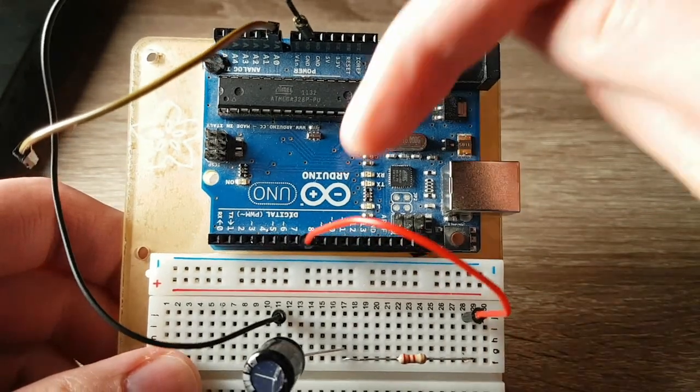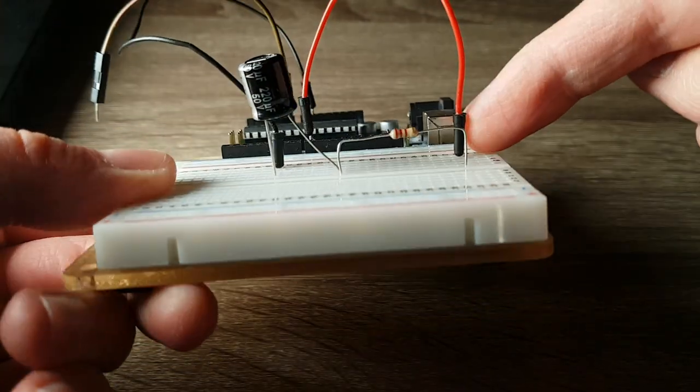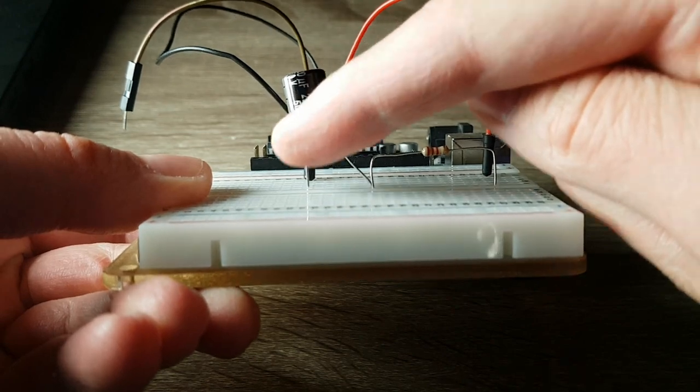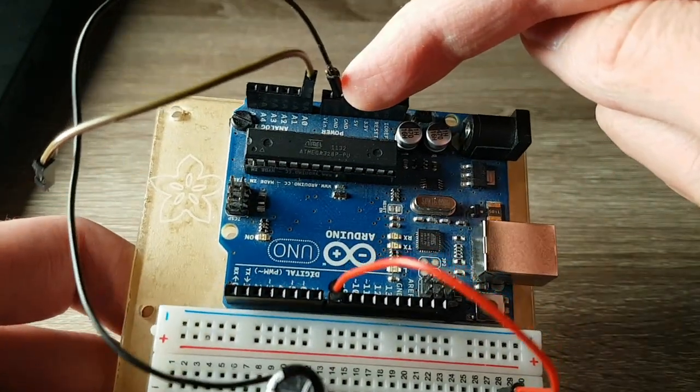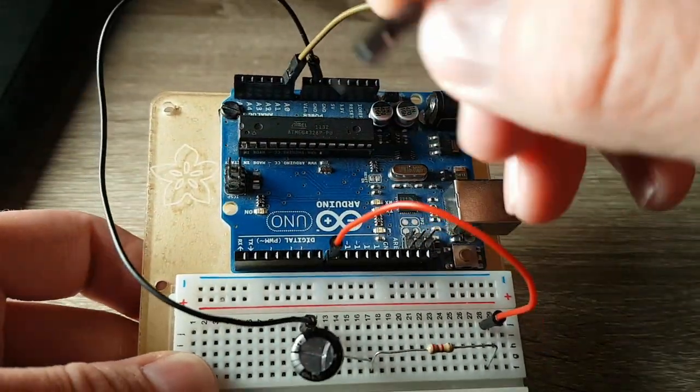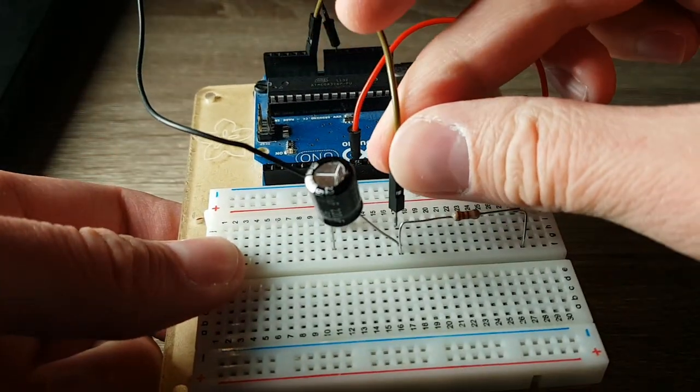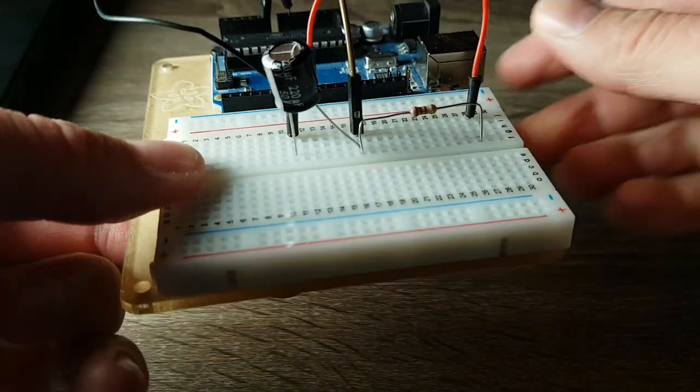Pin 8 is connected to the resistor, which is connected to the positive terminal of the capacitor, and finally the negative terminal of the capacitor is connected to ground. The only thing left to do is connect a wire from pin A0 to the capacitor's positive terminal. This allows us to measure the voltage across the capacitor itself.